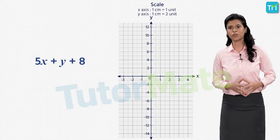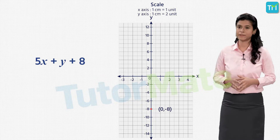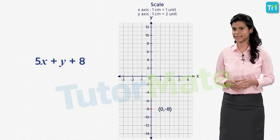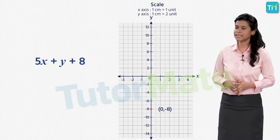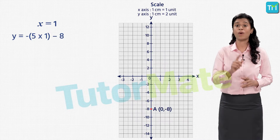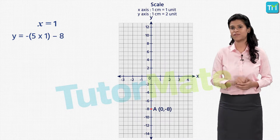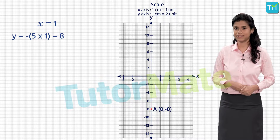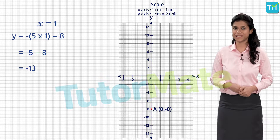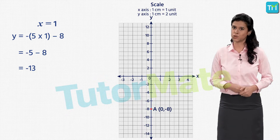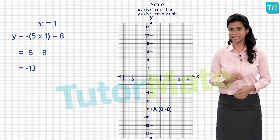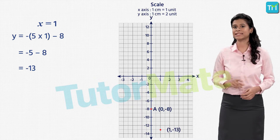Let's plot the point 0 comma minus 8 on the graph. You can see it is a point lying on the y-axis — let's call it A. Next, take x is equal to 1, so we get y is equal to minus 5 into 1 minus 8, which is equal to minus 13. Let's plot the point 1 comma minus 13 and call it B.